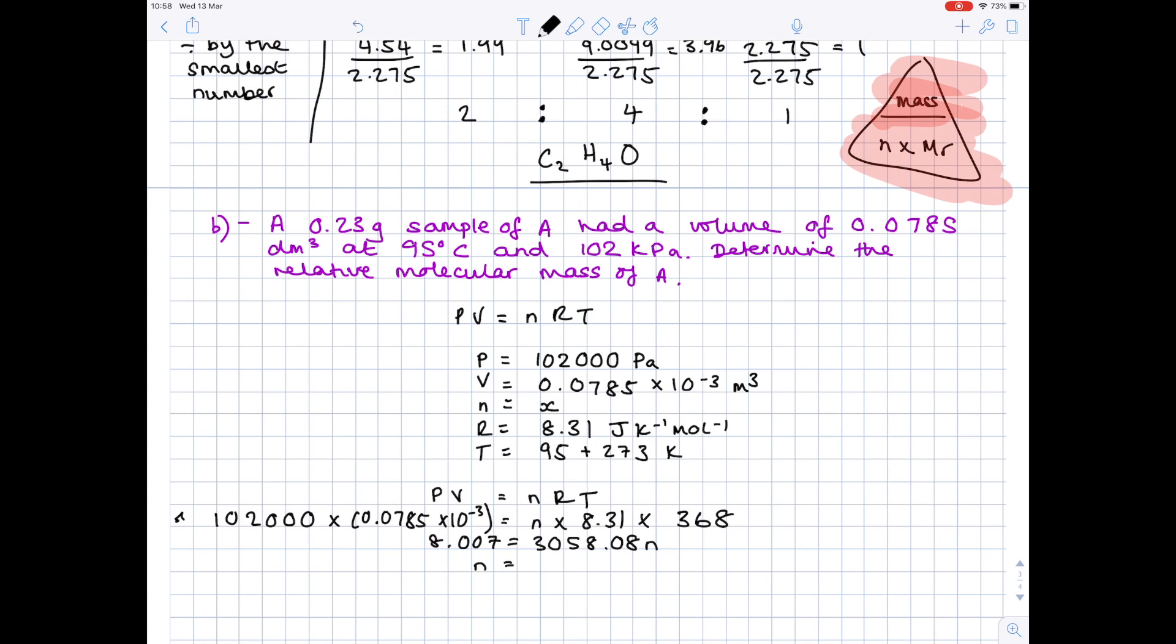Times by n. To get n by itself, you want to divide both sides by 3058. And you get a number of moles, which is 2.6183 times 10 to the minus 3.